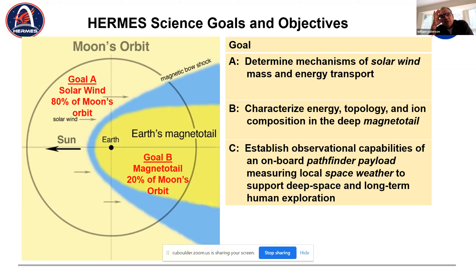The goals are to understand solar mass and energy transport, characterize energy topology and ion composition in the deep magnetotail, and we keep as a major goal — Goal C — to establish observational capabilities as a pathfinder payload to measure local space weather to support human exploration.